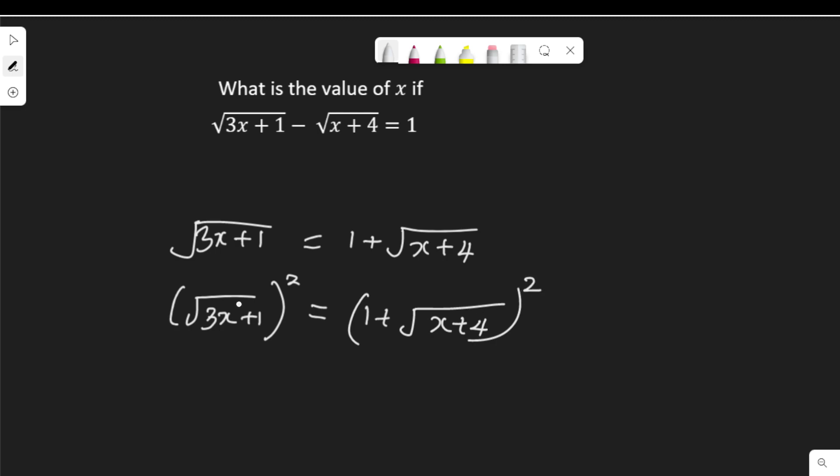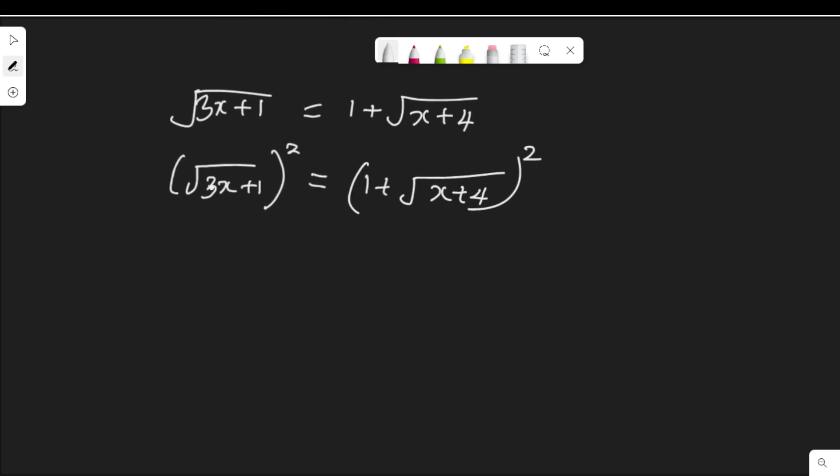Squaring the left-hand side clears the square root, so I have 3x+1 equal to... If I square this, squaring it won't clear this radical because of this one outside here. So instead, we're going to expand this bracket.